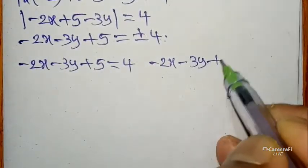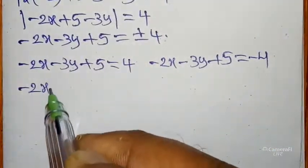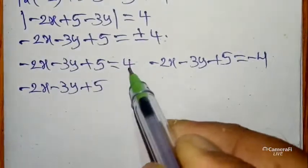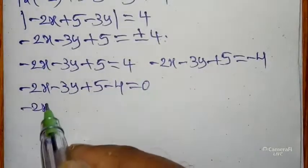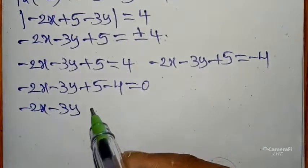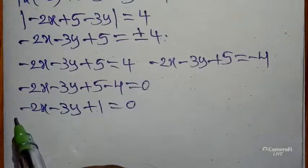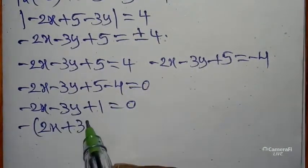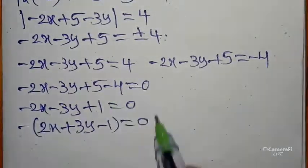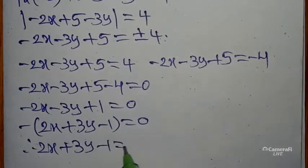We get -2x - 3y + 5 equals -4. Next, -2x - 3y + 5, this 4 coming to left side minus 4 equals 0. We get -2x - 3y - 1 equals 0. Actually here we are having -2x, don't get x coefficient negative. So take -1 as common, we get -1(2x + 3y - 1) = 0. Minus 1 coming to right side, we get 2x + 3y - 1 = 0.